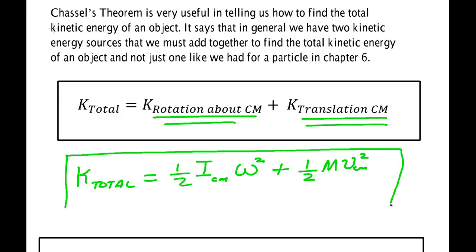This is how to find the total energy of an object in general motion. Back at the beginning of this course when we did not, when we had particles only, we didn't have any rotation. In other words, I was zero. And we had one half mv squared. And that's what we did in chapter six.